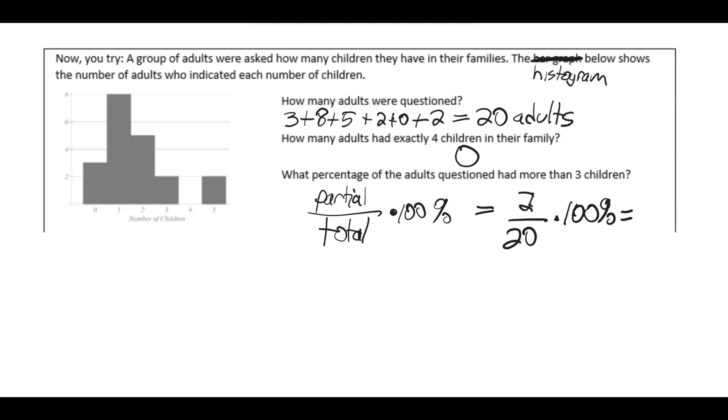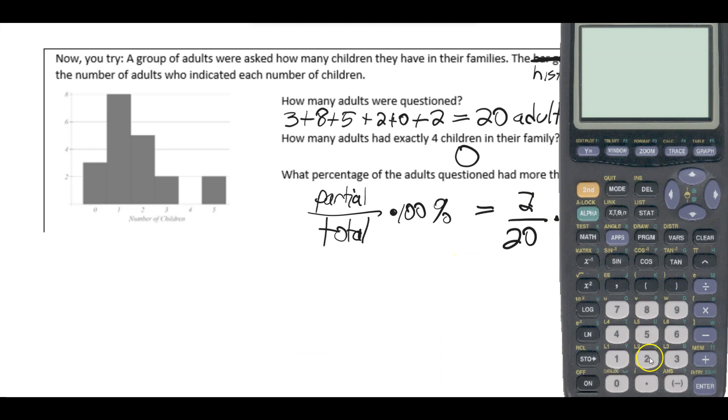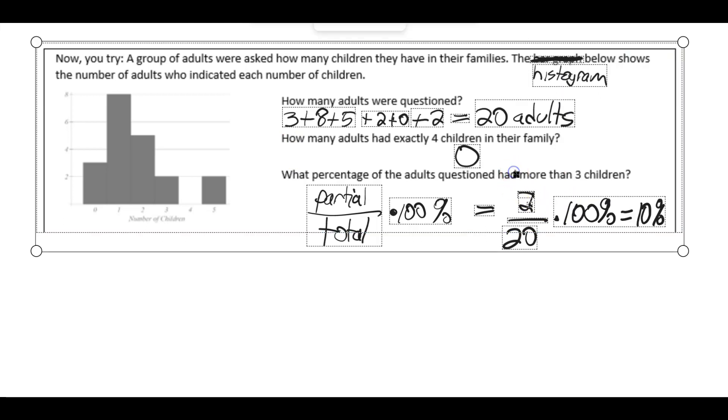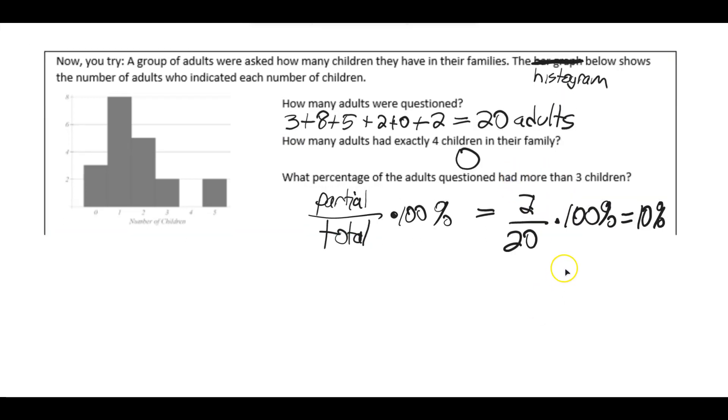And we compute that, and it gives us 10%. To double-check that operation, we can double-check all of this. So like the three plus eight plus five plus two plus zero plus two. There's the 20. Two divided by 20, 0.1, times 100. There's the 10%. Oops. All right. I hope this helps.